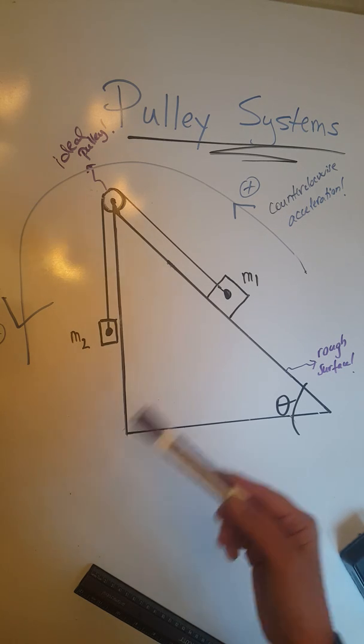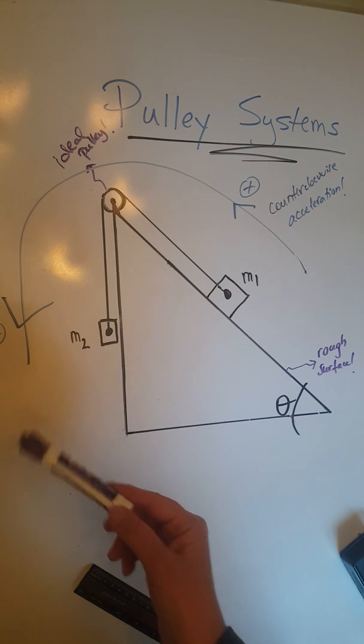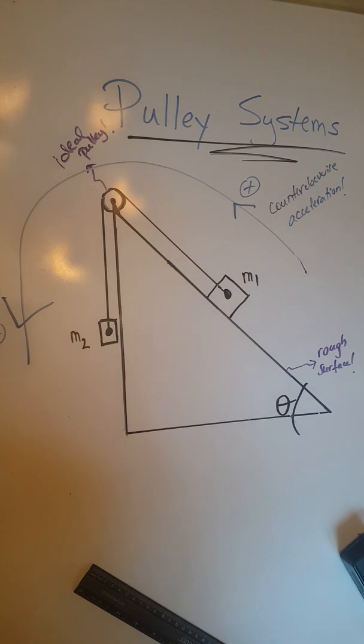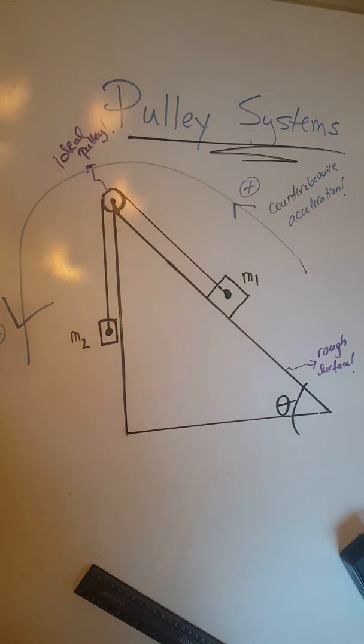The given information in this problem is that the whole system is accelerating counterclockwise. So let's go ahead and do the free body diagram for these objects. We are going to start with object M2.